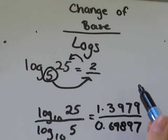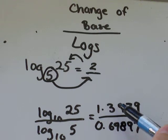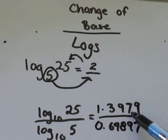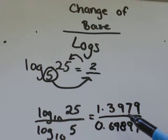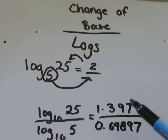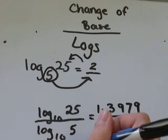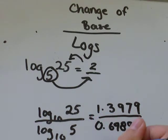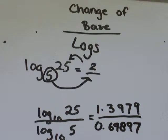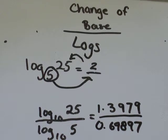All I'm going to do is type in 1.3979 divided by 0.69897 into my calculator, and I get 1.99999, which we'll round to 2.